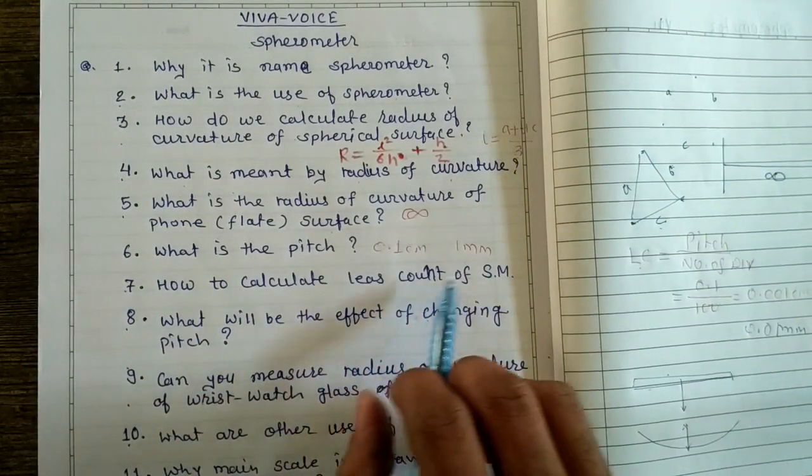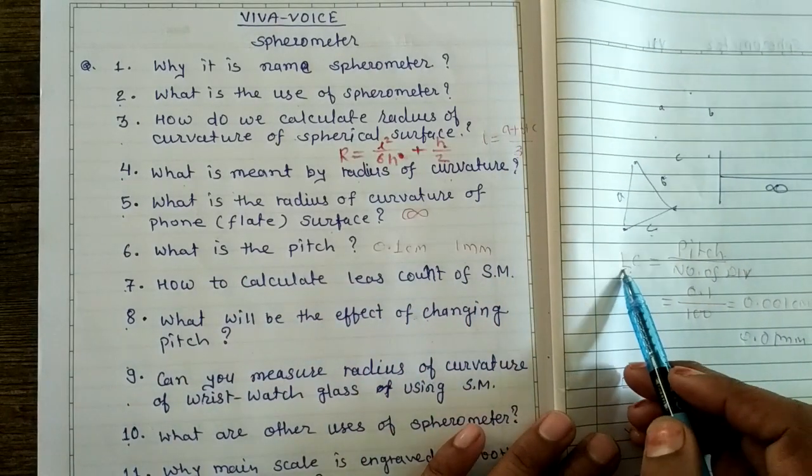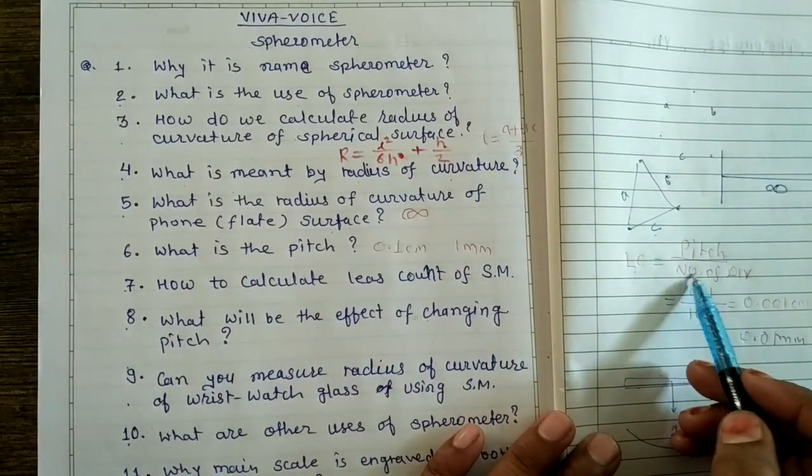How to calculate least count of spherometer? There is a relation: least count equals pitch upon number of divisions.